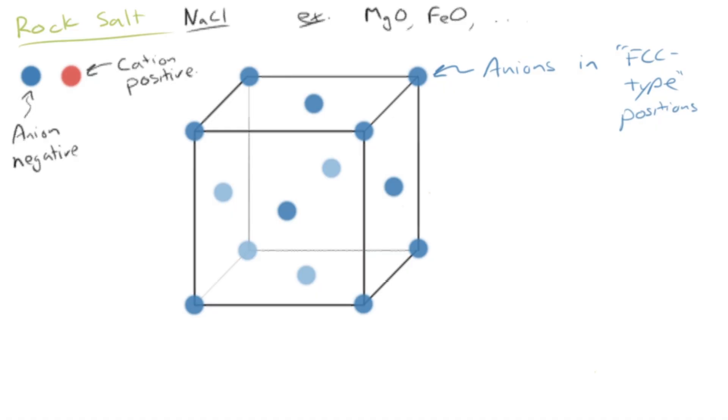we're going to have the cation touching the nearest neighbor anions. So to understand that, let's put the cations on to this structure, and so we're going to put them into these edges. So right in the center of all the cube edges is where we're going to position our cations, the positive ions.